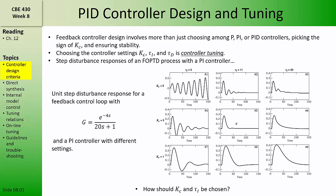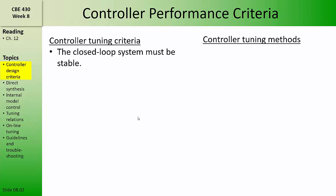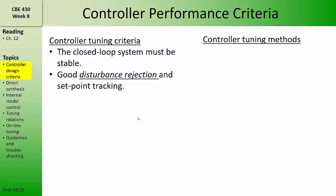How do we want the feedback control loop to behave? First and foremost, the closed loop system must be stable — that is, the output must be bounded for any bounded input. Next, we might want to tune the controller so that it obtains good disturbance rejection and setpoint tracking. That is, when a disturbance variable is perturbed, we want to minimize the resulting perturbations in the output variable, and when the setpoint is changed, we want the output variable to go to the new setpoint.